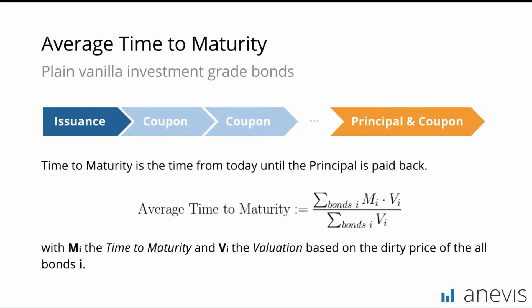Yes, absolutely. First, you just said we are not talking about duration today. I would like to add that all problems with regards to reporting that we are talking about today equally apply to other metrics such as duration, modified duration, and so on. So, which kinds of bonds is calculating the average maturity not really meaningful for?